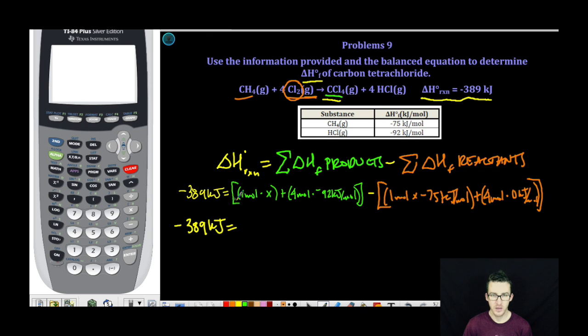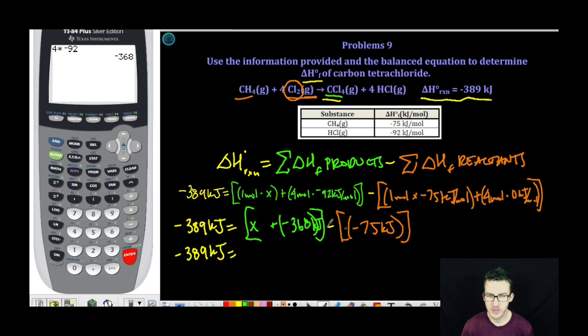All right. It's algebra time. First, one times X, easy enough. That is just X plus four times negative 92, negative 368. Next, we do the same thing for our products. One times negative 75, we get negative 75. Now I'm just going to clean up some of my signs here. This is going to really be X minus 368 kilojoules.